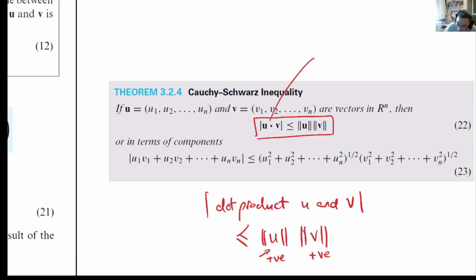On the left hand side, the dot product, remember that the dot product we have learned in the last slide shows that u dot v can be represented as u1 v1 plus u2 v2 plus un vn.